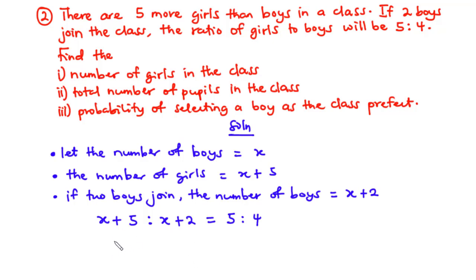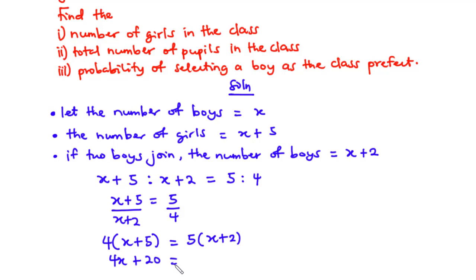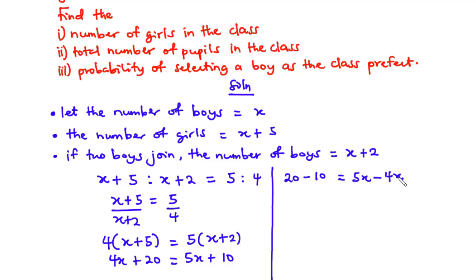We can express this as (x+5)/(x+2) = 5/4. Now let's cross multiply: 4 times (x+5) equals 5 times (x+2). Expanding: 4x + 20 = 5x + 10. Transposing: 20 minus 10 equals 5x minus 4x, which gives us 10 equals x. Therefore, x is equal to 10.